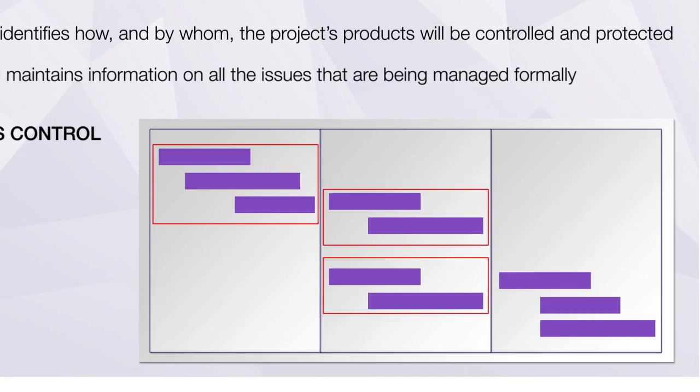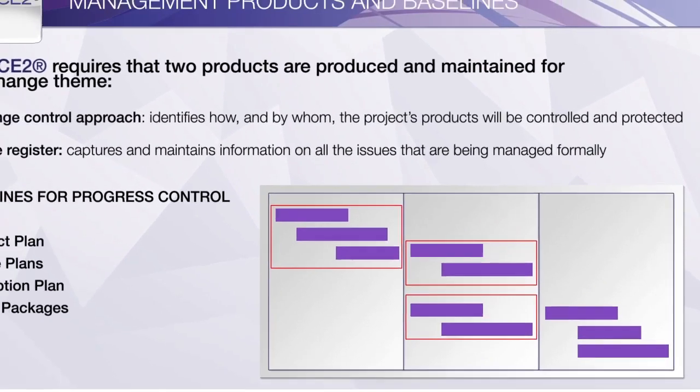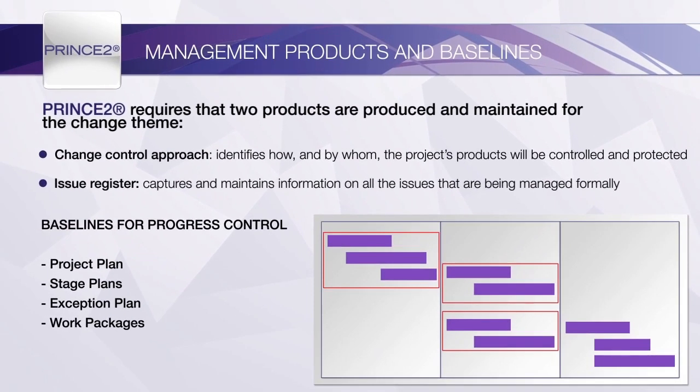Once approved by the Project Board, these baselines must not change unless authorised or re-approved by the Project Board. Without this formal Change Control, there would be no control of the project. Change Control is not required for records and reports, as these are considered dynamic products that can and will change on a frequent basis. Specialist products are baselined when approved and subject to formal Change Control.